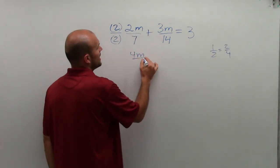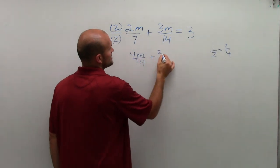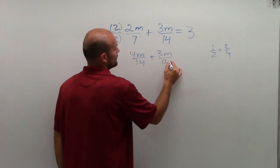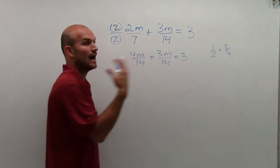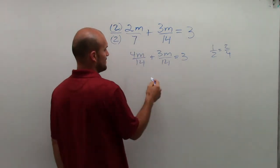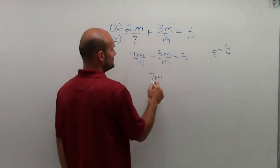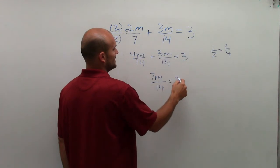So therefore, I'll have 4m over 14 plus 3m over 14 equals 3. Now, I can combine my like terms, combine my fractions, so I get 7m over 14 equals 3.